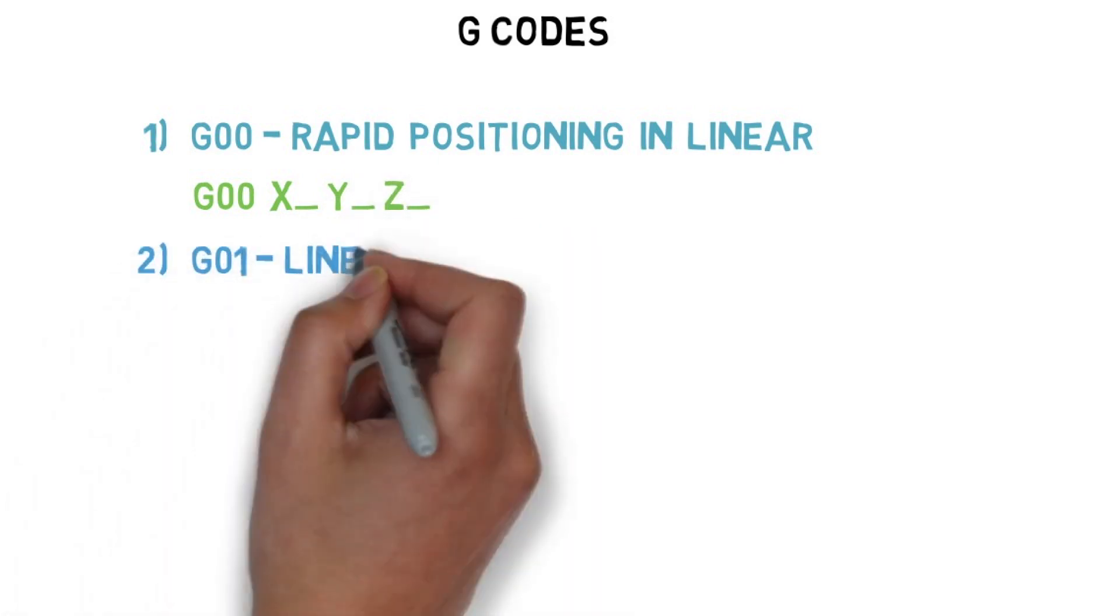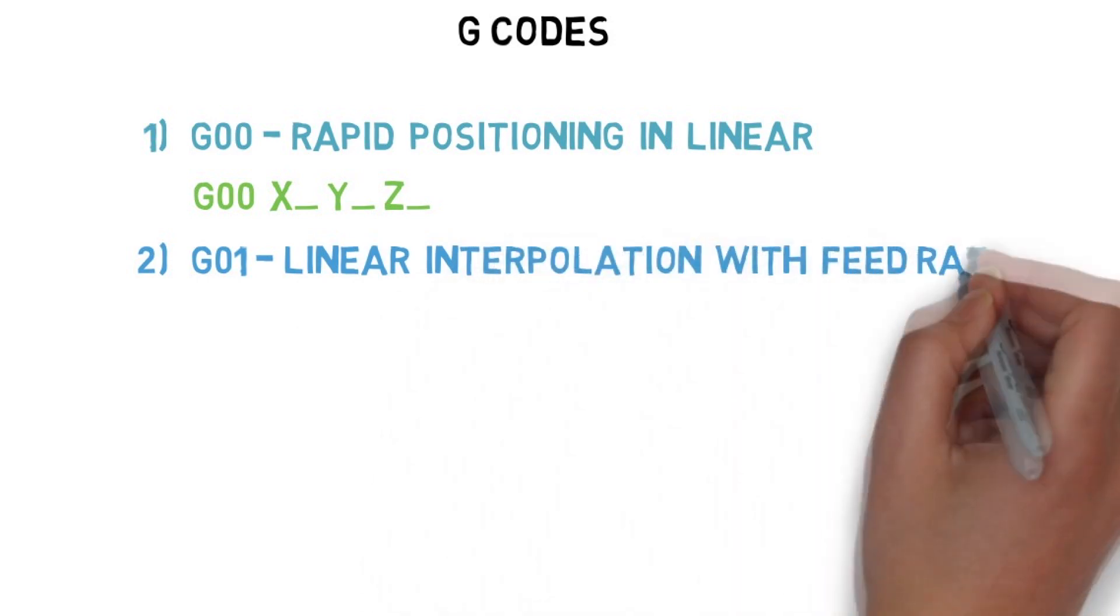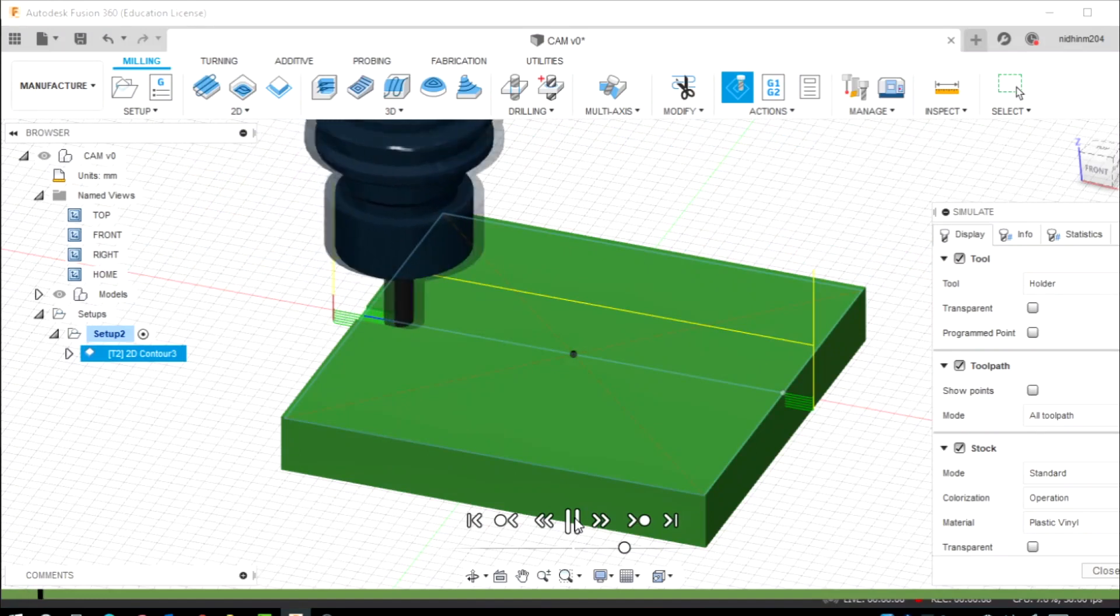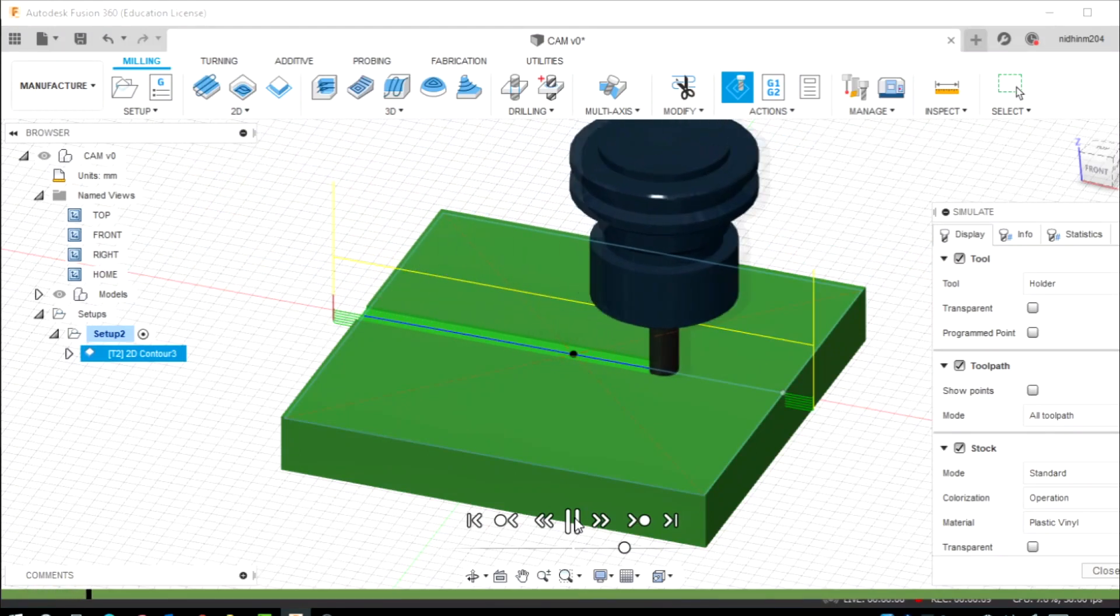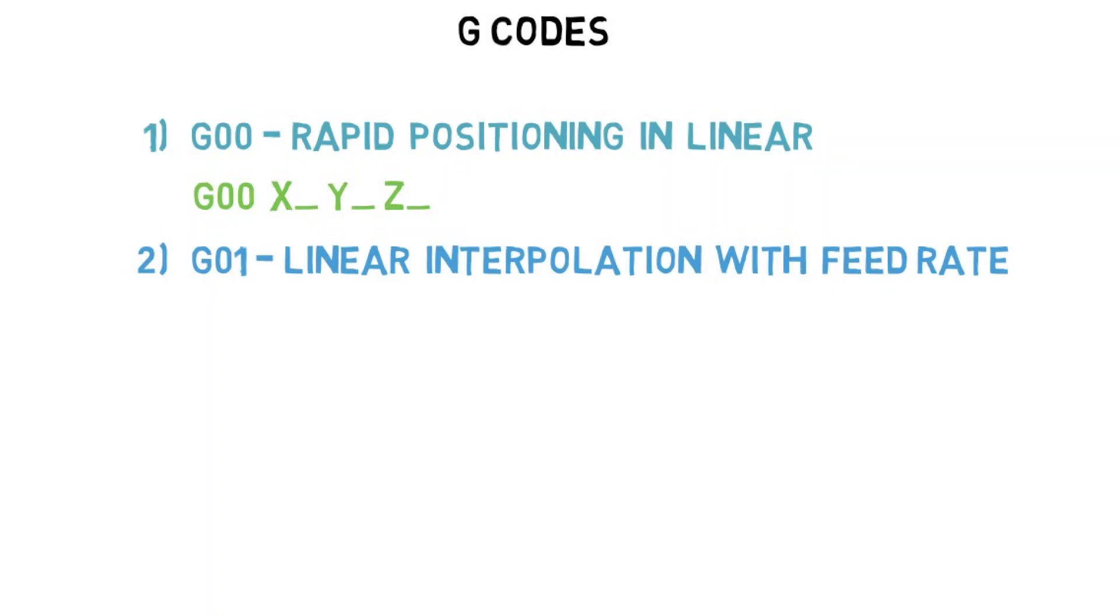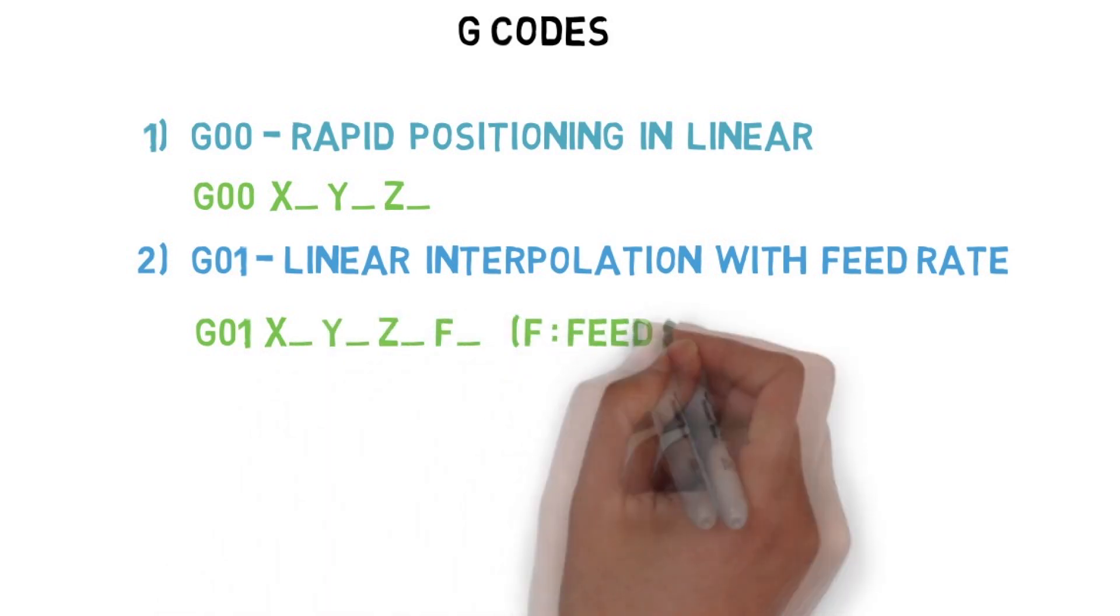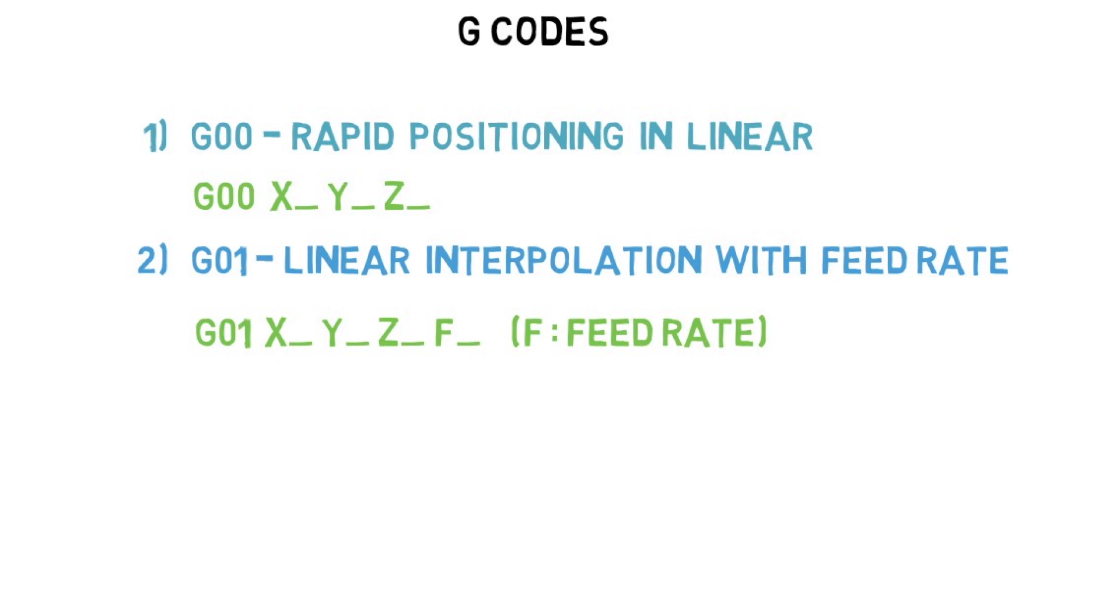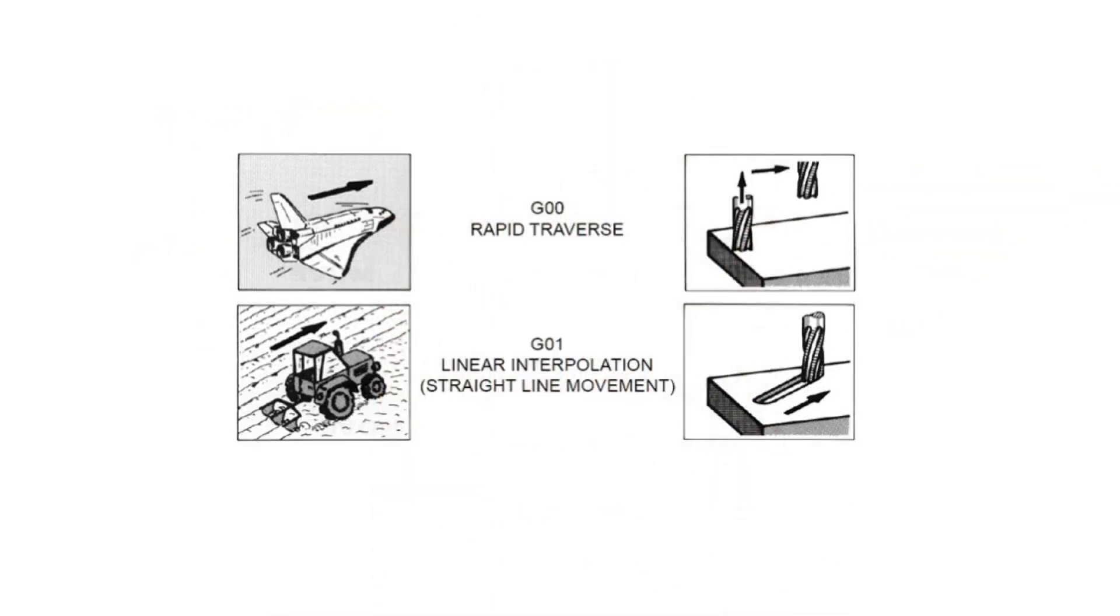Number two, G01. G01 is linear interpolation with feed rate. This is used when the tool and workpiece are in contact and where the tool needs to move with a particular feed rate for linear movement. The format is G01 XYZ coordinates and F. F is the feed rate you can choose as per your cutting parameters. This is the difference between G00 and G01.